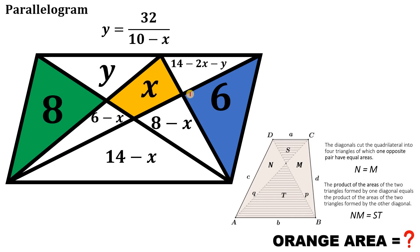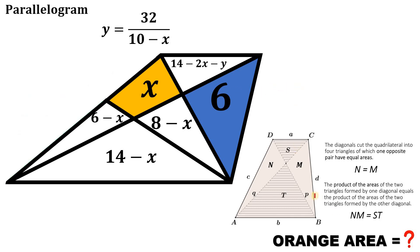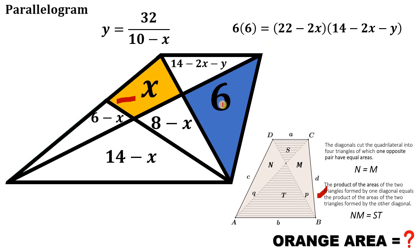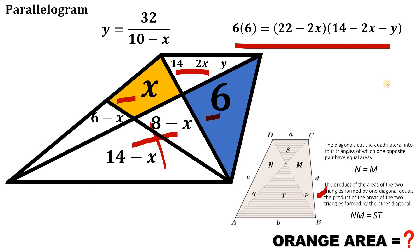Now using the second trapezoid and the second concept: 6 times 6 equals (22 − 2x) multiplied by (14 − 2x − y). Let's focus on this equation. The goal is to find x, not y.